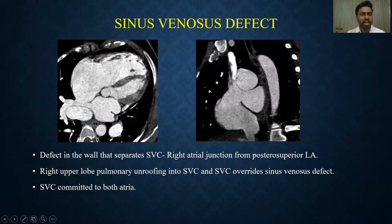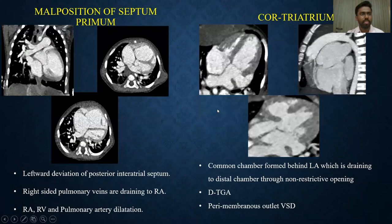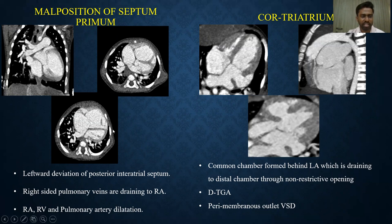Coming to the sinus venosus defect: this is a defect in the posterior superior wall of the left atrium which separates the right atrium and SVC junction from the left atrium. In this defect, the right upper lobe pulmonary veins are unroofed into the SVC, and the SVC overrides the sinus venosus defect and is committed to both atria. In the case of malposition of septum primum, there was leftward deviation of the posterior interatrial septum, leading to drainage of the right-sided pulmonary veins into the right atrium and left-sided veins into the left atrium.